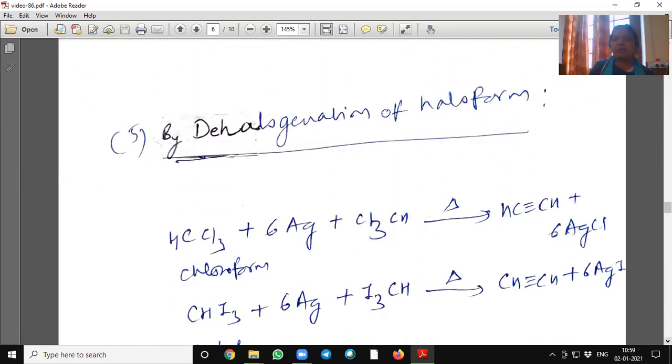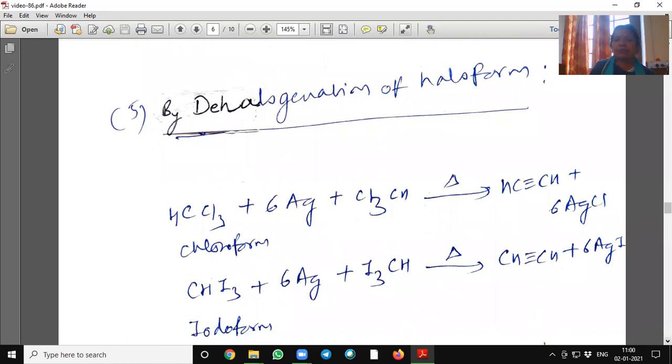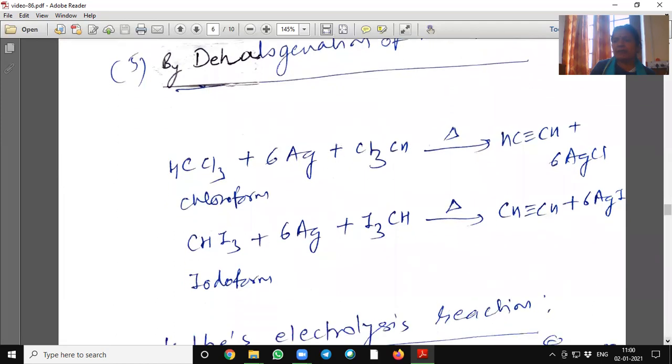By dehalogenation of haloform means chloroform or bromoform or iodoform. When two molecules of haloform reacted with silver, six moles of silver, it will give corresponding acetylene.